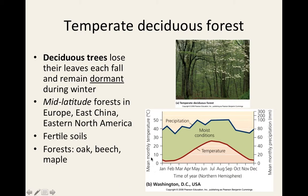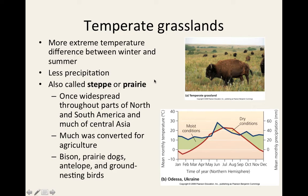Looking at the climatograph for the temperate deciduous forest: the left axis shows monthly temperature range, the right axis shows precipitation, the red line represents temperature, and the blue line represents precipitation. You can see it's warmer in summer and colder in winter, meaning this biome experiences all four seasons.